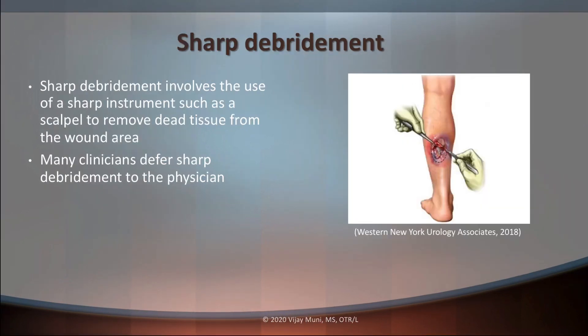Another method is called sharp debridement. Just as it sounds, it uses a sharp instrument such as a scalpel to remove dead tissue from the wound area. However, sharp debridement is pretty dangerous, and most clinicians defer it to the physician — because once you cut something, you can never uncut it. It can also be tough to distinguish between fat tissue, tendon, and necrotic tissue, so defer this to someone more experienced, like a physician.